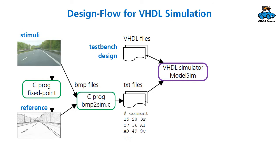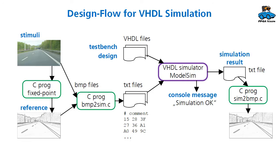From the VHDL simulation, you get console messages, that could be something like simulation OK. And you can also get simulation results on a file. And here we output a text file, which represents the output image.